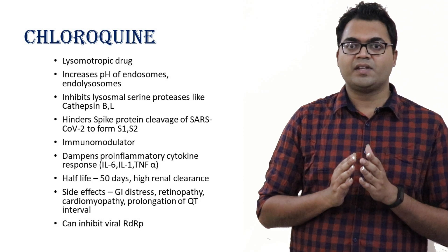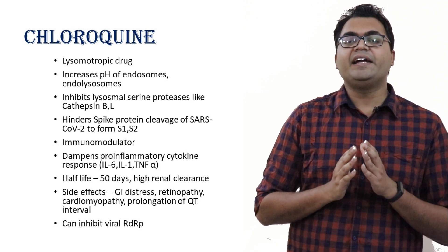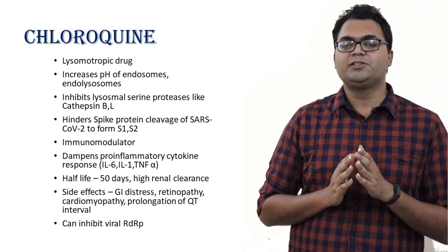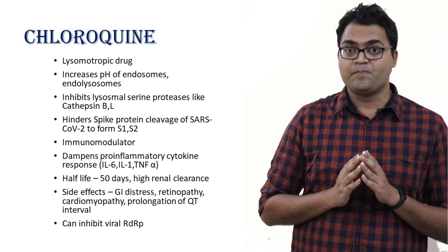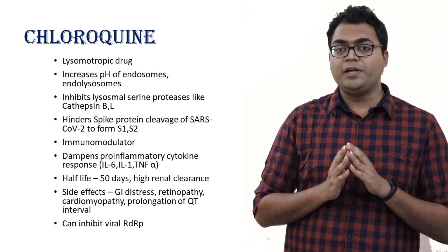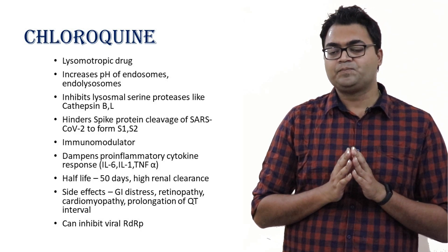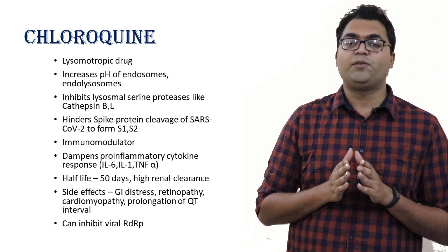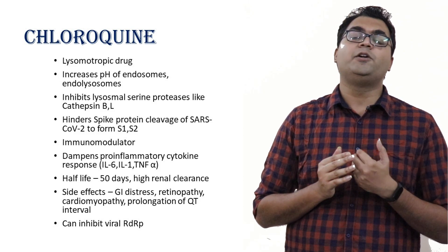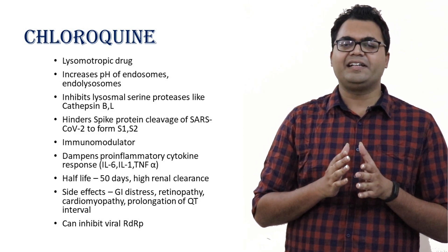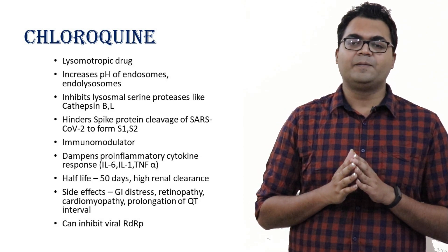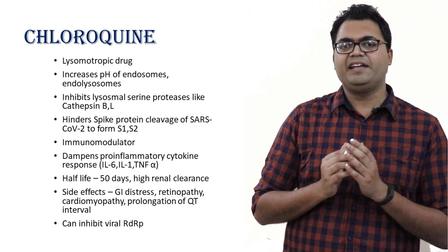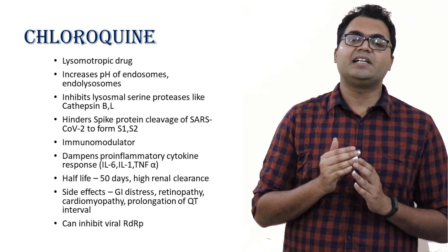Chloroquine can also inhibit RNA-dependent RNA polymerase (RDRP). RDRP inhibition has been shown in research to occur in the case of the influenza virus. SARS-CoV-2 is a positive-stranded non-segmented RNA virus that also depends on RNA replication, so it is hypothesized — though not yet fully proven — that chloroquine may also inhibit RDRP in SARS-CoV-2.